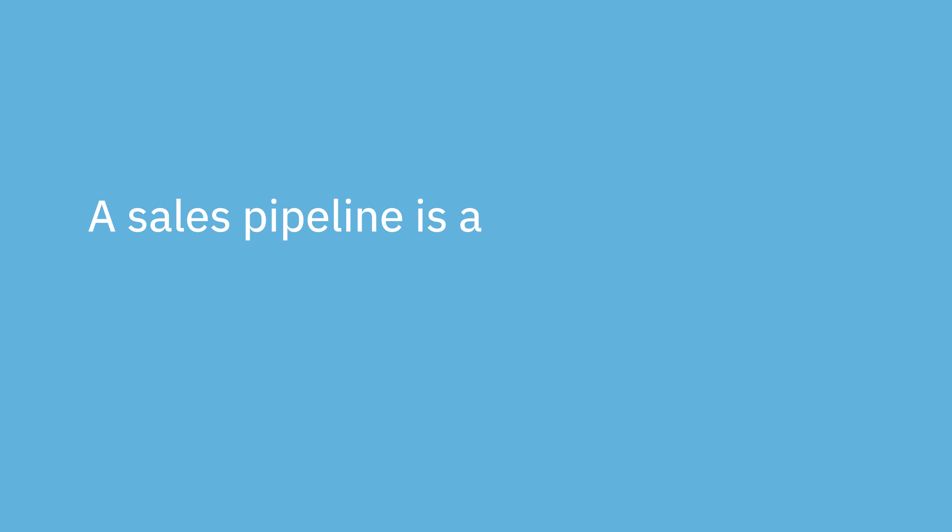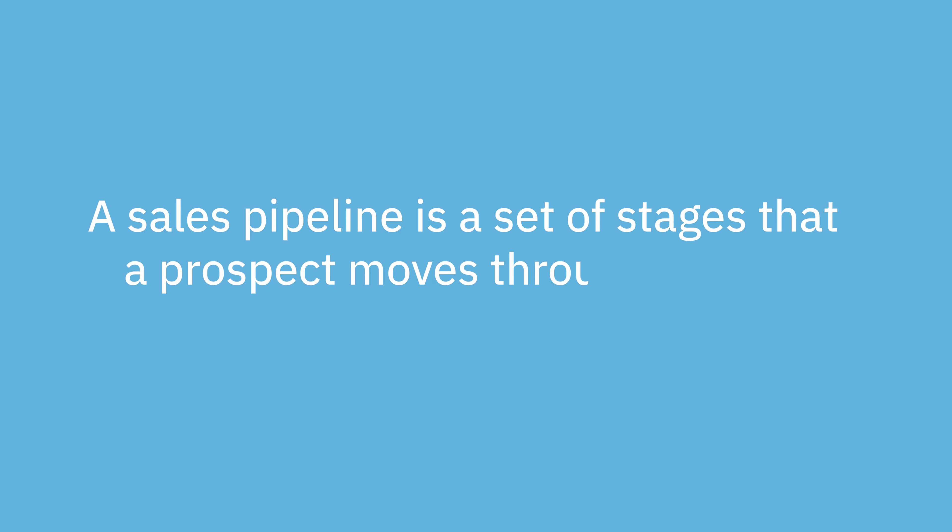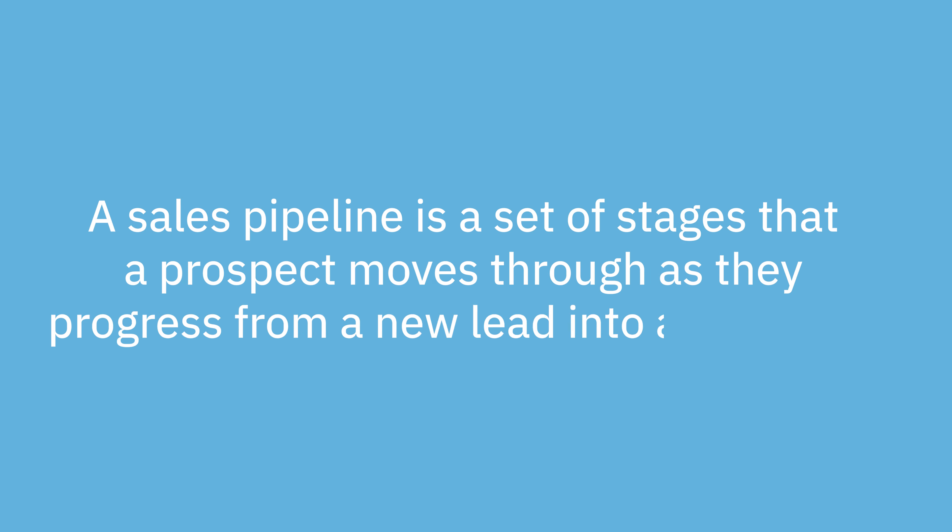The actions in the sales process are divided into pipeline stages. A sales pipeline is a set of stages that a prospect moves through as they progress from a new lead to a customer. Each of those stages represents a major milestone that has to be reached before a lead can move forward. Once the goal of each pipeline stage is reached, the prospect is advanced to the next stage. What makes this a little confusing is that many sales professionals also use "pipeline" to mean the quantity or dollar value of the deals currently in their pipeline.